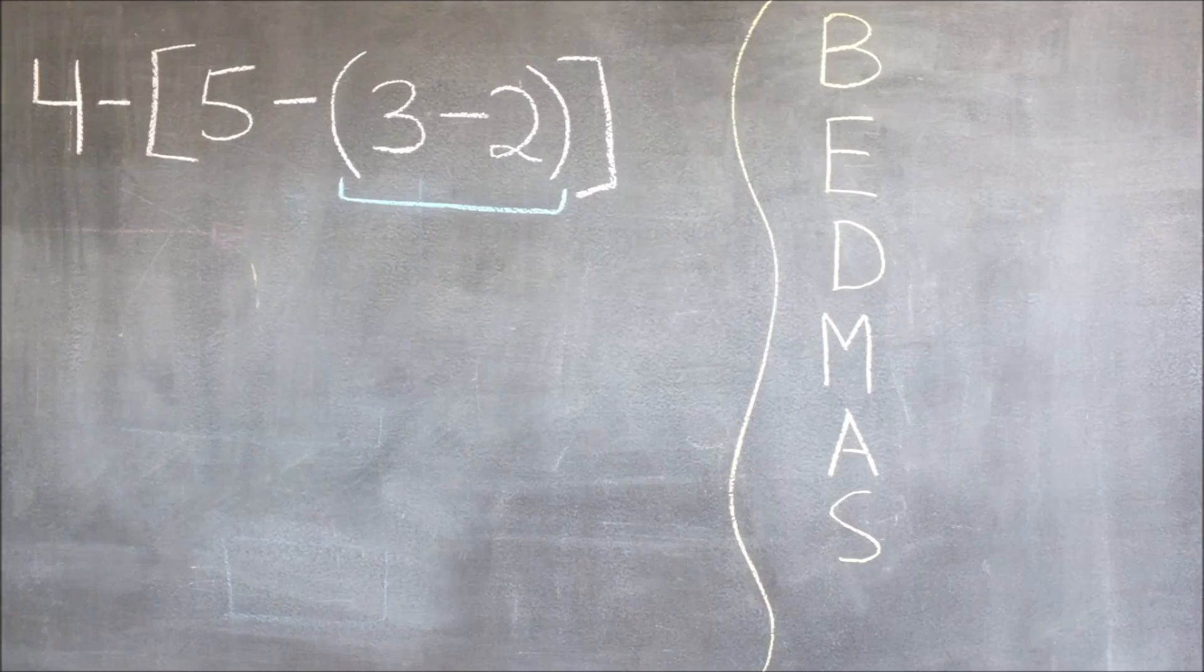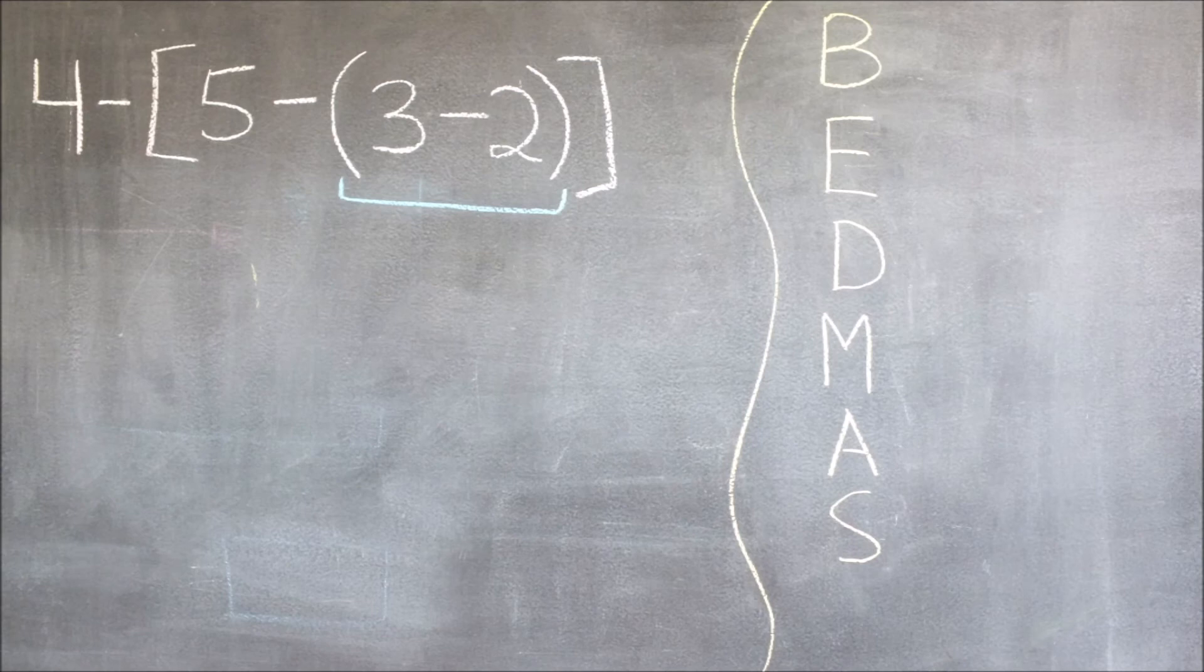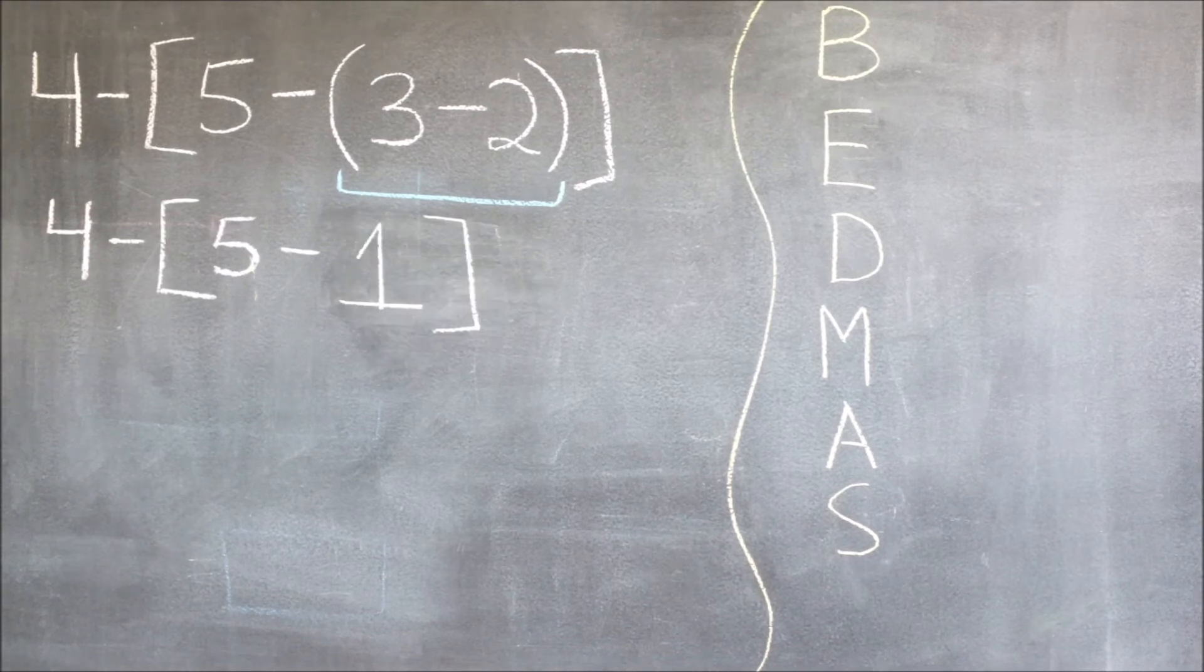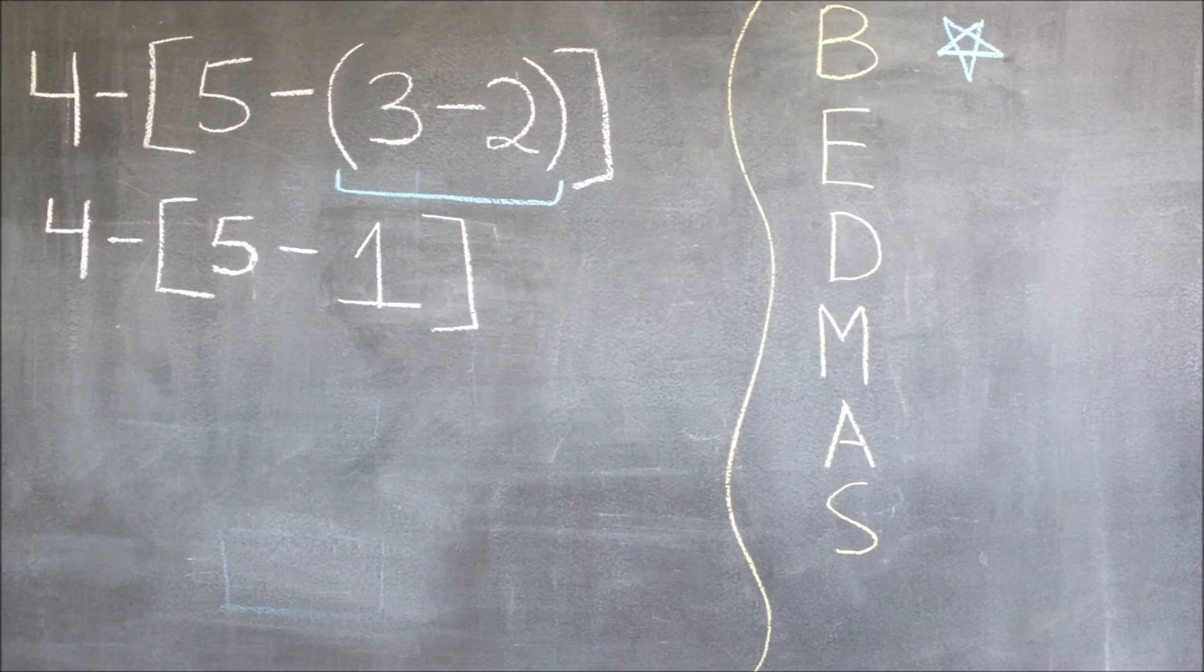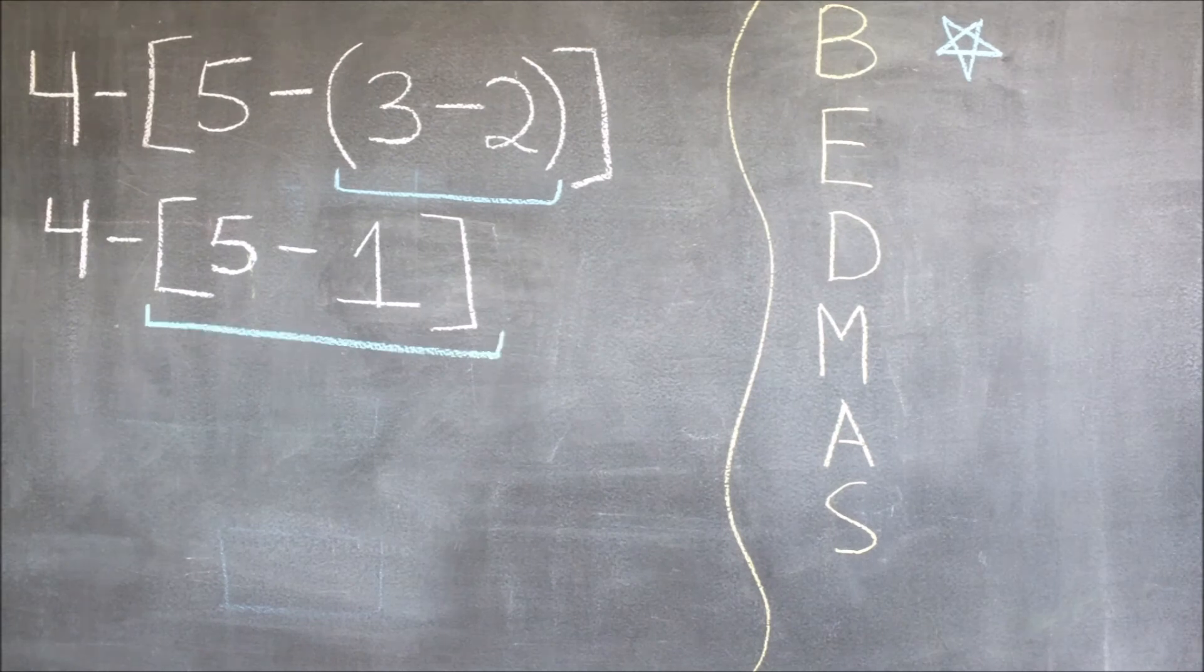We start with the round brackets and solve what is inside them. And then, we continue with our brackets since we still have the box brackets to go. And then, we continue solving using order of operations to get to our final answer.